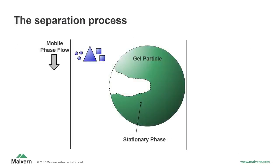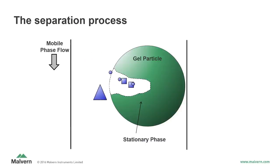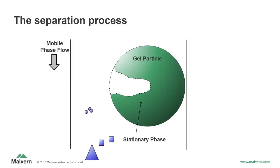So now we know that GPC separates molecules based on size, but how does it work? If we take a closer look at the stationary phase, we can see that the column gel is made of particles that contain pores. The presence of these pores is the key to making GPC work. The separation process operates based on the diffusion, or permeation, of the analyte molecules in and out of the pores on the gel particles of the stationary phase. The largest molecules spend the least amount of time inside the porous gel particles, the intermediate-sized molecules can diffuse partially into the pores, while the smallest molecules can easily diffuse in and out and thus require the most time to elute.